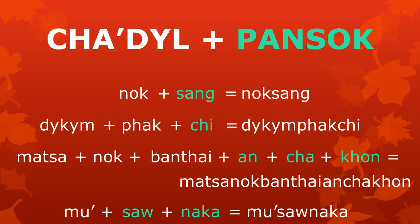We can also combine tzadl and pansok together to make longer words. For example, we can combine the tzadl 'nokk' and the bound part 'sang' to make a word. We can combine the tzadl 'dkkm' and 'pakk' with the pansok 'qi' to make 'dkmpakqi'. We can combine the three tzadl 'matca', 'nokk', and 'bantai' with the pansok 'an', 'cha', and 'kon' to make 'matca nokbantai ancha kon'.